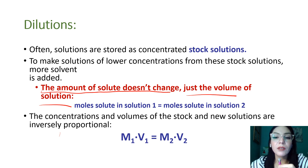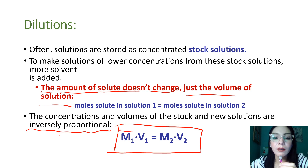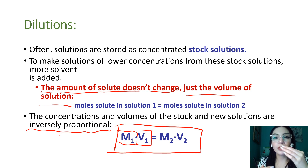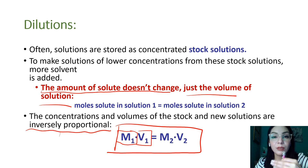Concentrations and volumes are inversely proportional to each other, and this is described by the dilution equation. Inversely proportional means that if one goes up, the other goes down — for example, original molarity versus final volume. You'll see this clearly when we start calculating dilutions.